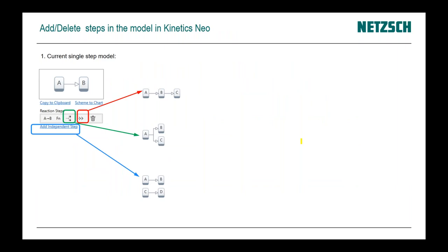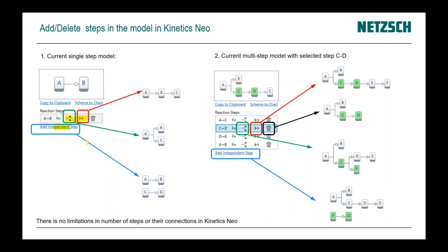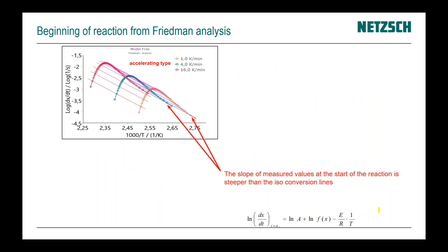Inside the software, there is a possibility to add one following consecutive step, one competing step, or one independent step. You can create visually any complexity of model. For example, you can select any step and for that step add one consecutive step or add one additional competing step.